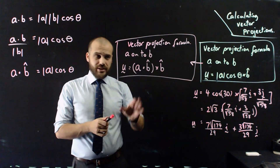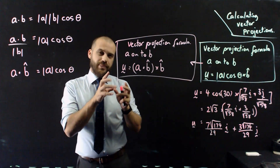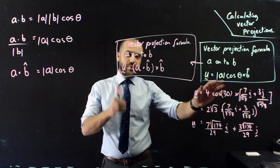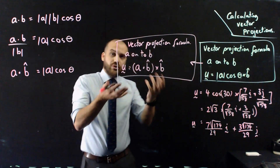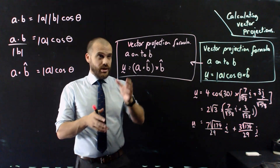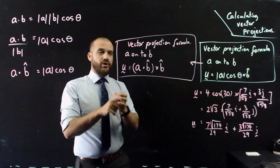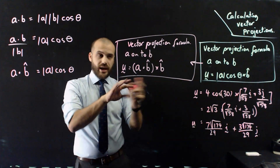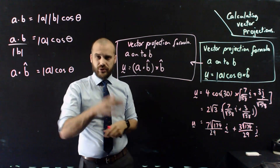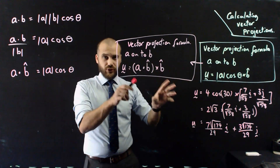The benefit of this second formula is that if you have both vector A and vector B in component form, you can find the vector projection of A onto B quite easily without needing an angle. If you want to find the projection of B onto A, just swap the letters A and B in whichever formula you're using. That is how you calculate vector projections — two formulas and why they work.